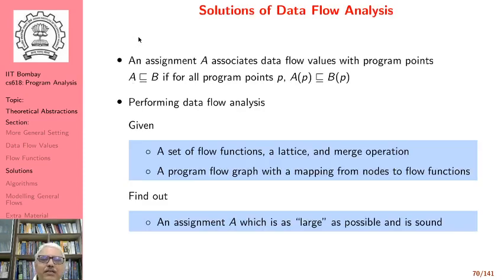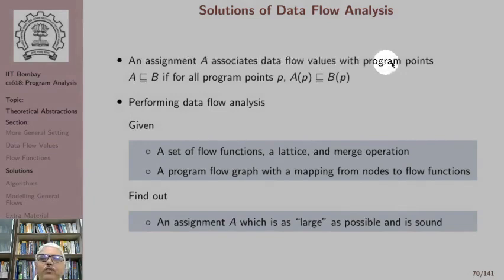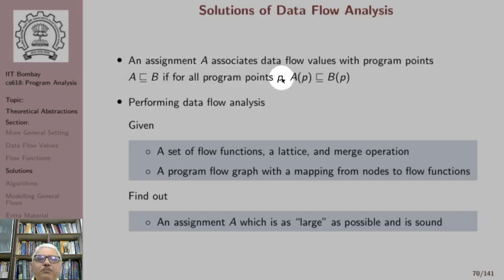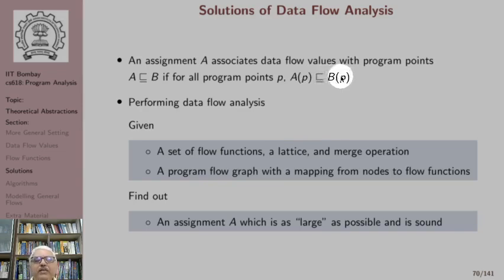An assignment A associates data flow values with a program point. So an assignment is a mapping from program points to data flow values. Since we already have a partial order relation between data flow values, we can also define a partial order relation between assignments. We say an assignment A is weaker than an assignment B if for all program points P, A of P is weaker than B of P. With this notion, we can define what it means to perform data flow analysis.